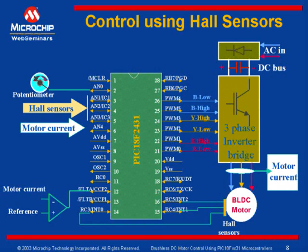For applications where high-resolution speed measurement is required, quadrature encoders can be used. We will see in the coming section how quadrature encoders can be interfaced with the 18F SSP-1 family.